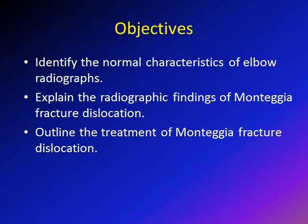So what are the objectives of this lecture? First, we'd like to identify the normal characteristics of the elbow radiographs in children, and then we're going to show the radiographic findings of Monteggia fracture dislocation so you can identify these cases from the x-ray. And finally, we're going to briefly outline the treatment of Monteggia fracture dislocation.